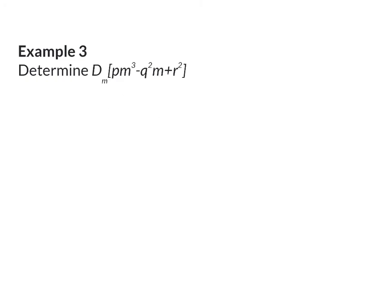In example 3, we have quite a few different variables, and here it is very important to then determine with respect to which variable we should differentiate. Here we are asked to differentiate with respect to m, and that means that m will be the variable that's the focus of our differentiation. So the p, q, and r can be seen as constant values.